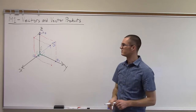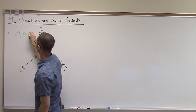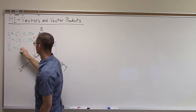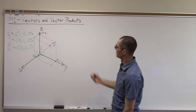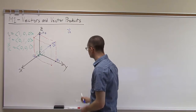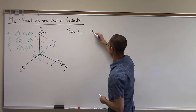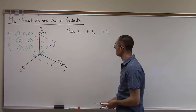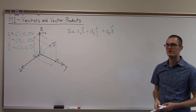We can use those to express the components of this vector. So i is the vector (1, 0, 0), j is (0, 1, 0), and k is (0, 0, 1). Those are our three basic unit vectors. Now we can express the vector A algebraically as a weighted sum of those three vectors: the vector A equals Ax times i, plus Ay times j, plus Az times k. So that's how we write out a vector algebraically.